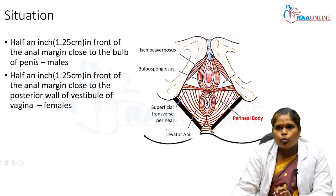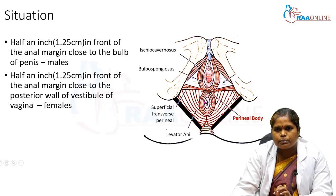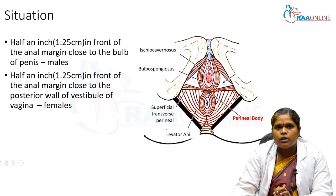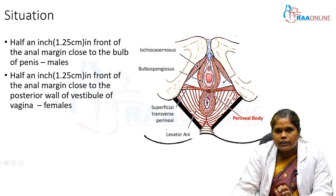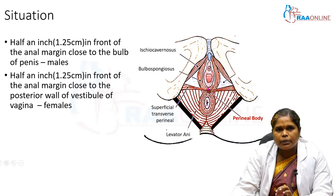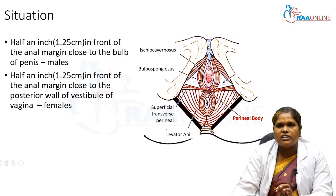It is situated 1.25 centimeters, that is half an inch, in front of the anal margin. So this posterior aspect is the anal margin, and the anterior aspect includes the vagina and the urethra. It is situated half an inch in front of the anal margin and half an inch behind the vaginal margin in the case of females.